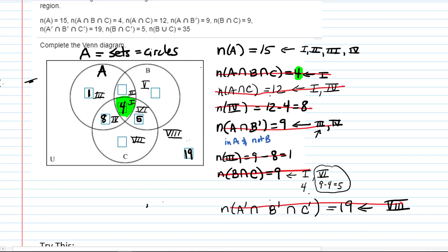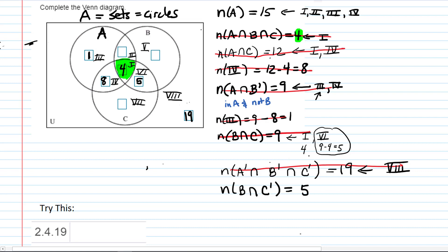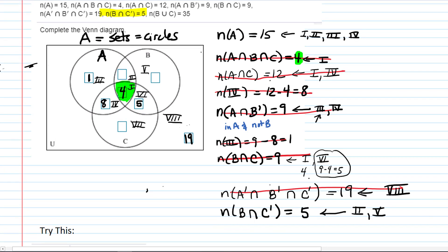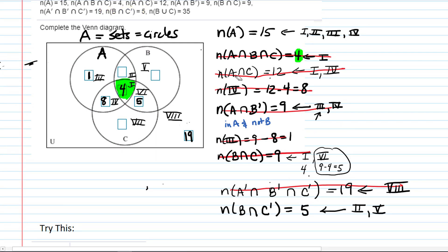Now the next fact is the number in B intersect C complement is five. Describe for me in words other than intersect and complement—how can you describe what they're telling us there? The number that are in B and not C. It has to satisfy both characteristics: it has to be in B and it has to not be in C. Which region or regions satisfy that? Two is in B but not C, and five is also in. So regions two and five together have five elements. Do we know either of those regions two or five yet? No. So we can't use that fact yet. You have to know all but one of the regions in order to use the fact. So we're not ready to use that fact yet. We'll come back to it.